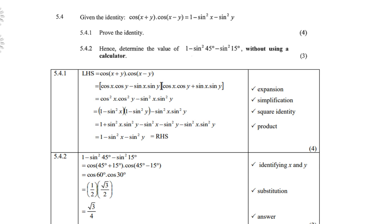5.4.2: hence determine the value of 1 − sin²45 − sin²15. Comparing this to the right-hand side of 5.4.1, x = 45° and y = 15°. So we replace it with cos(45 + 15) · cos(45 − 15) = cos 60 · cos 30. Using special angles, the answer is √3/4. Remember, they say no calculator — do not give the answer in decimal form.